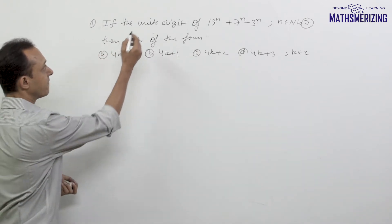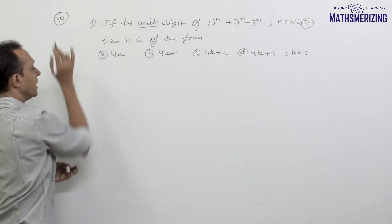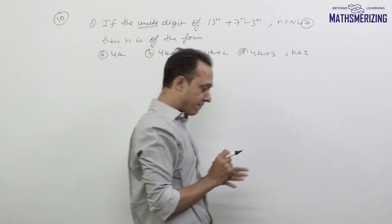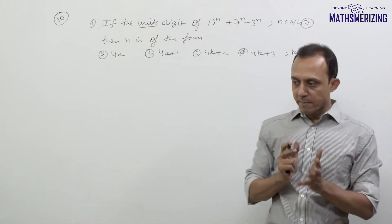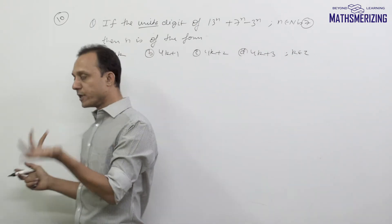I know that I can find the units digit by dividing any number by 10. Whatever remainder I get should give me its units place.